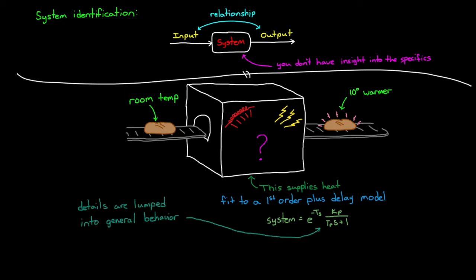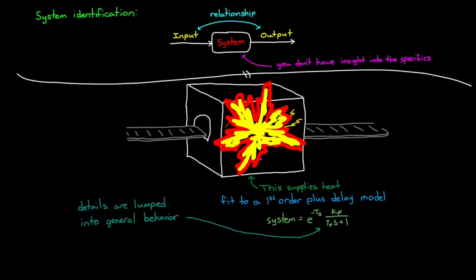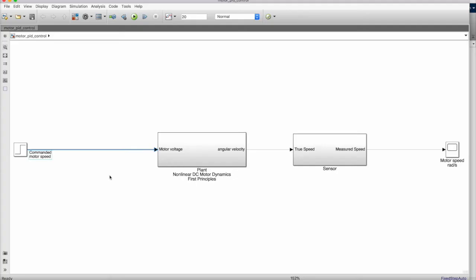You get to avoid needing to understand the details of your system since they're lumped into general behavior. However, you still need to understand your system well enough to know whether you generated the right model structure. For example, if you based your model on how bread heats up and then you send some metal through, you might realize pretty quickly that you do in fact need to know whether it's a coil or a microwave. So this isn't a method that you can run with complete ignorance.